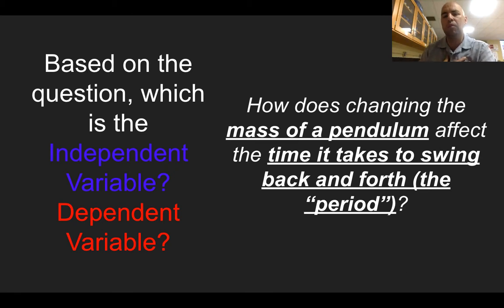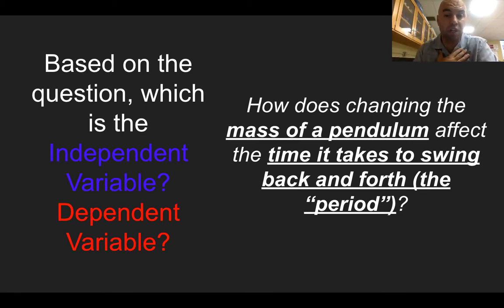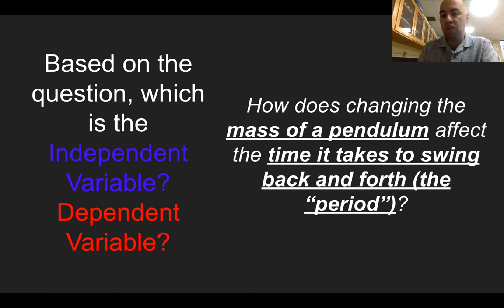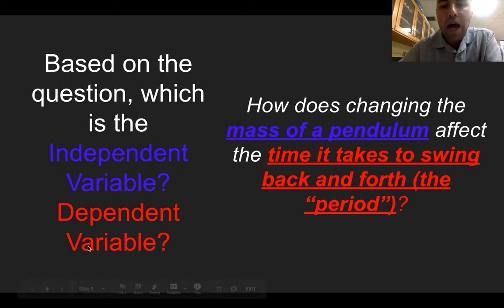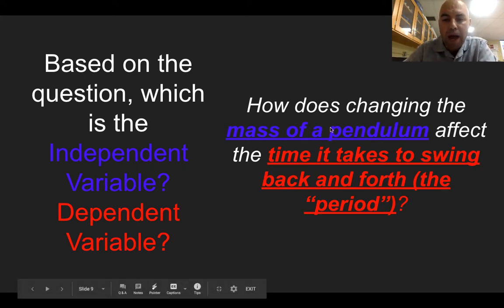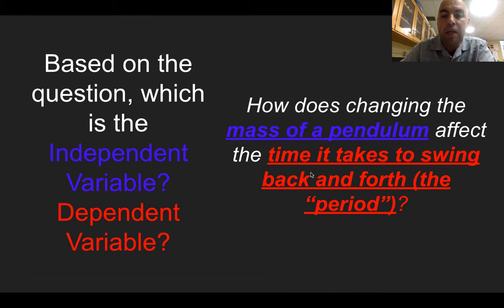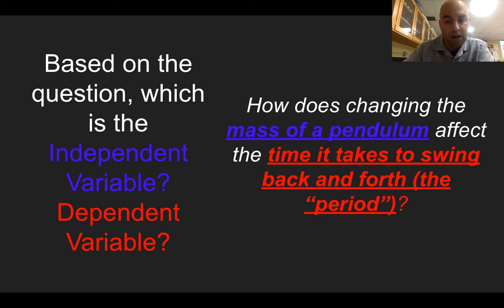Which one is the independent variable and which is the dependent variable? The independent variable is the one we are actively changing — I'm in charge of it. The dependent variable also changes, but it depends on the independent variable. Here, I'm actively changing the mass of the pendulum, so that's the independent variable. The time it takes to swing back and forth — the period — is the dependent variable.